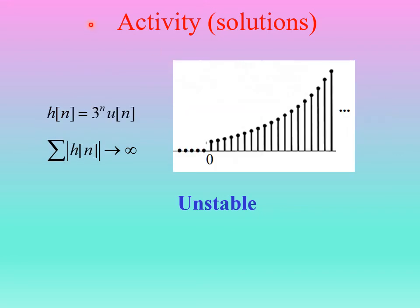Example three: h(n) = 3^n · u(n). If plotted, three to the nth power grows very big very fast. The sum of the impulse response likewise goes to infinity. Therefore this represents an unstable system.